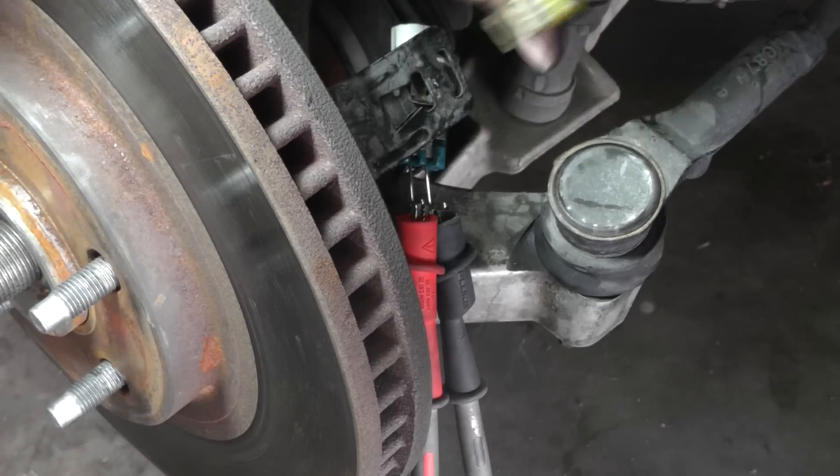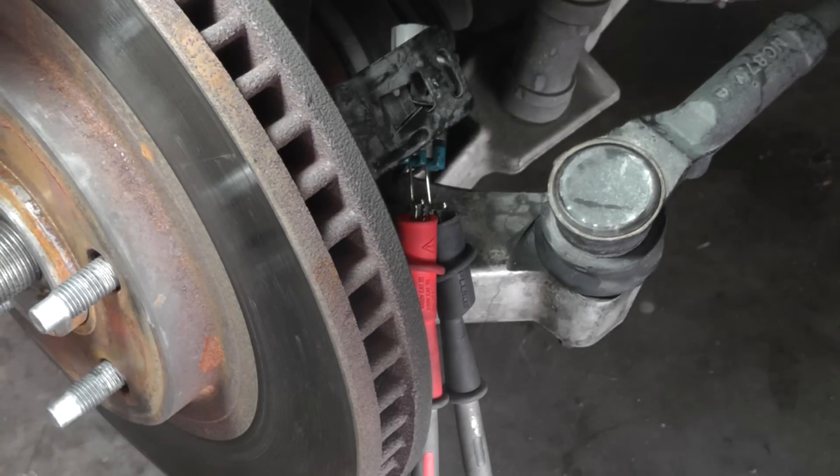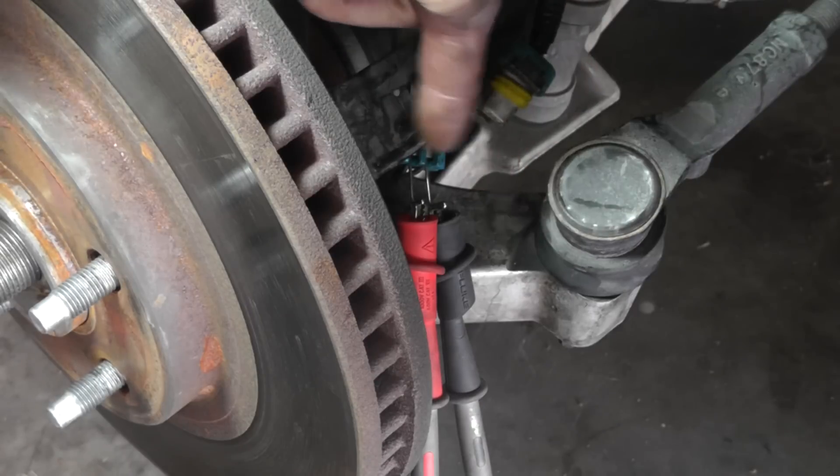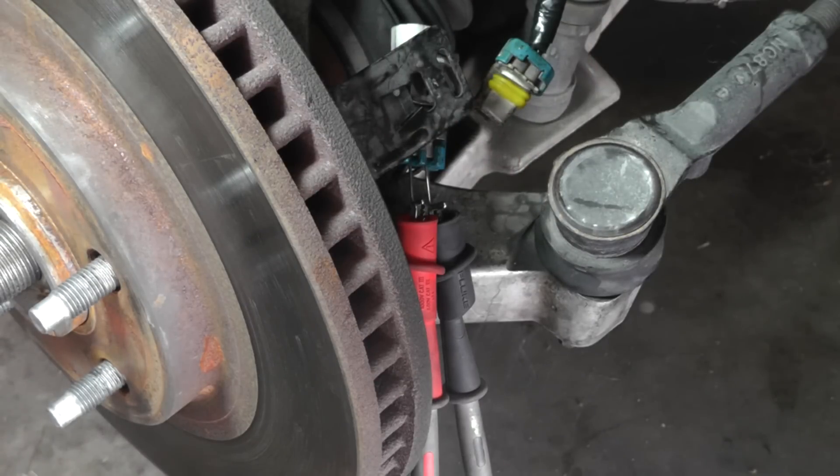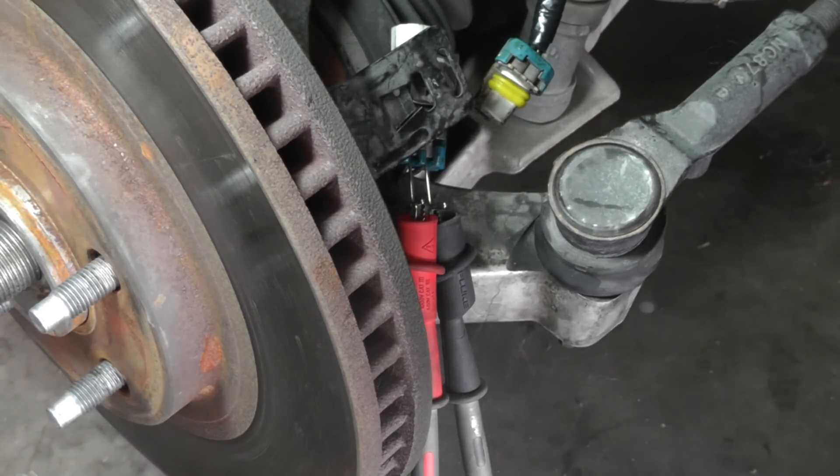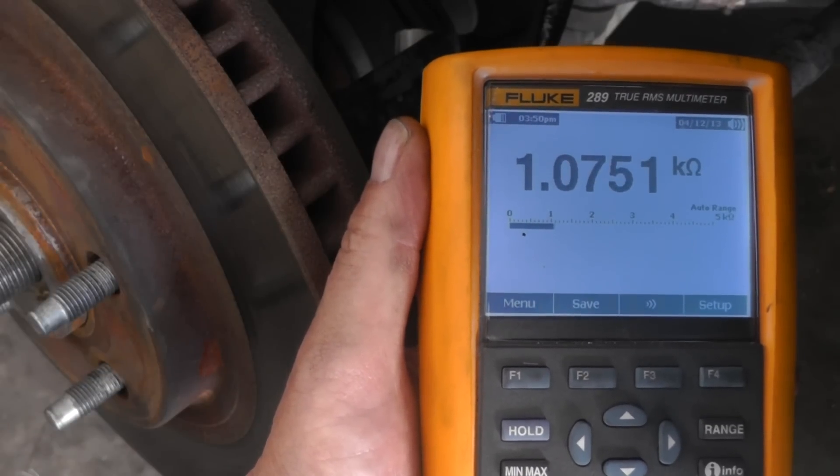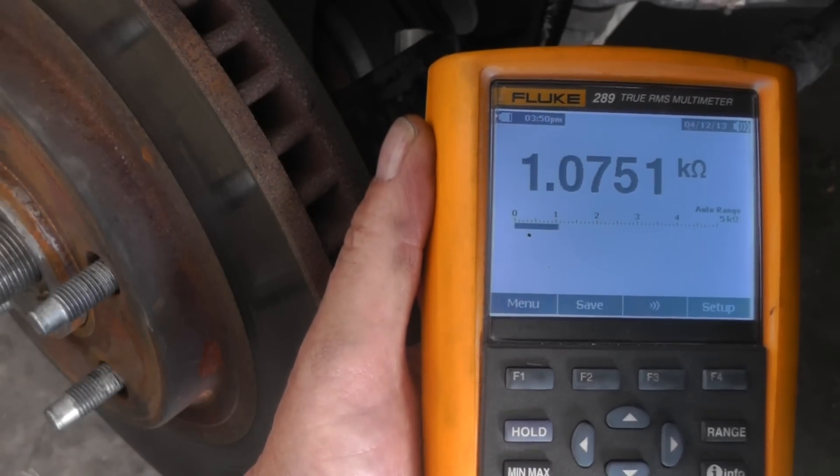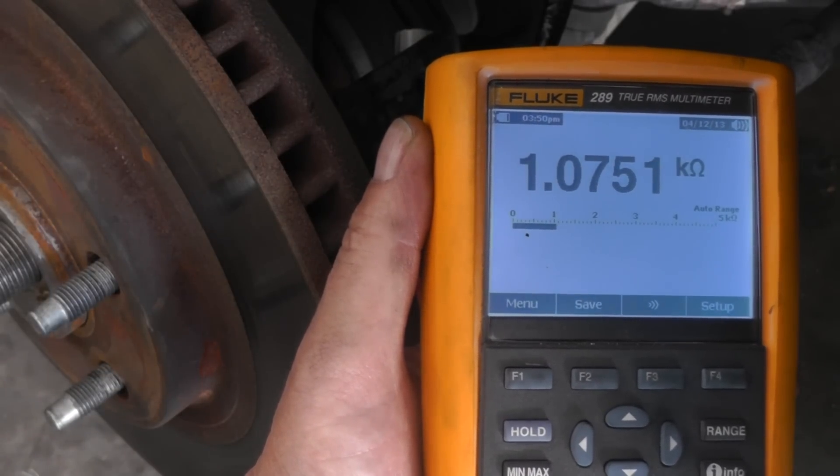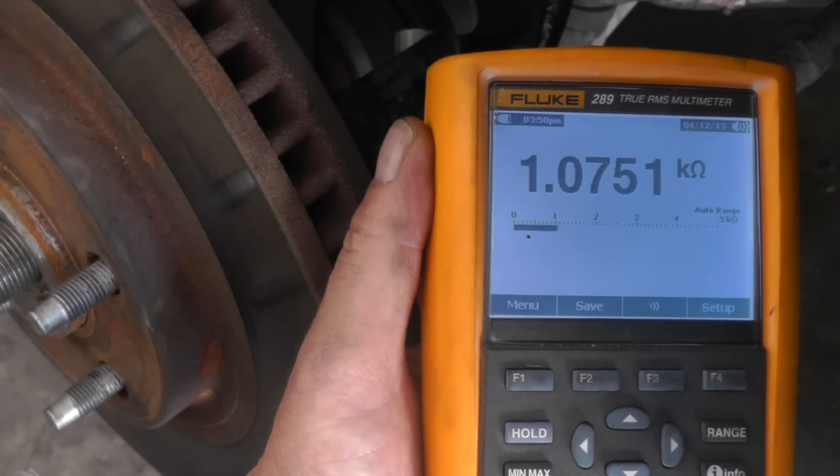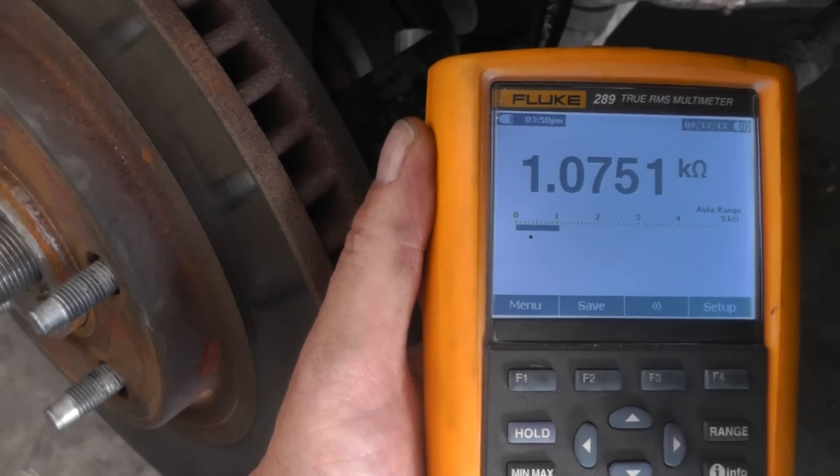If you can see right here, I've got the wheel speed sensor disconnected, got a couple of T-pins in here, and what we're going to do right now on the first test is measure our resistance. We are measuring 1.0751 kilo ohms, or 1075.1 ohms.